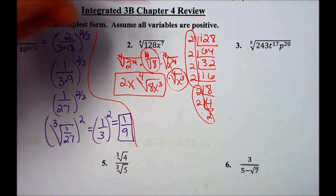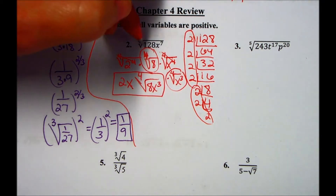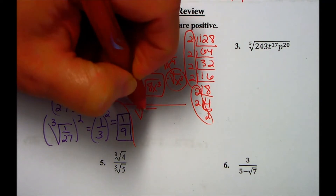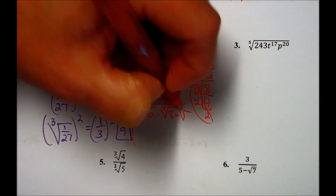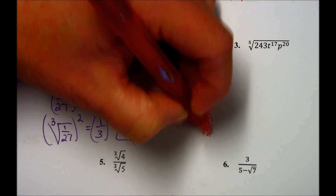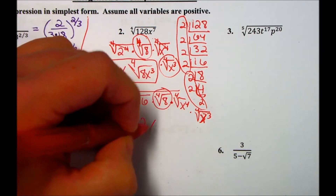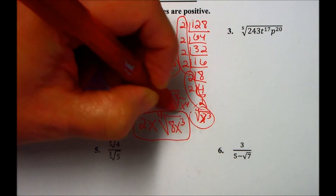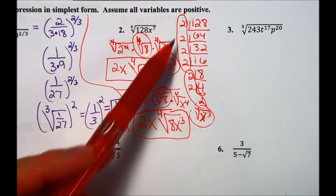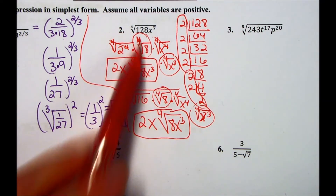So the things that stay under the radical are 8 and x to the 3rd — make sure the 4th root is in the radical and doesn't look like part of the x to the 4th power. That would be your simplified version. Another way: if you know 16 is a perfect 4th power (2 to the 4th is 16), you could factor 128 into 16 times 8. The 4th root of 16 gives 2, and the 4th root of x to the 7th splits into 4th root of x to the 4th times 4th root of x to the 3rd, giving x outside and x to the 3rd inside. Either method gives you 2x times the 4th root of 8x to the 3rd.